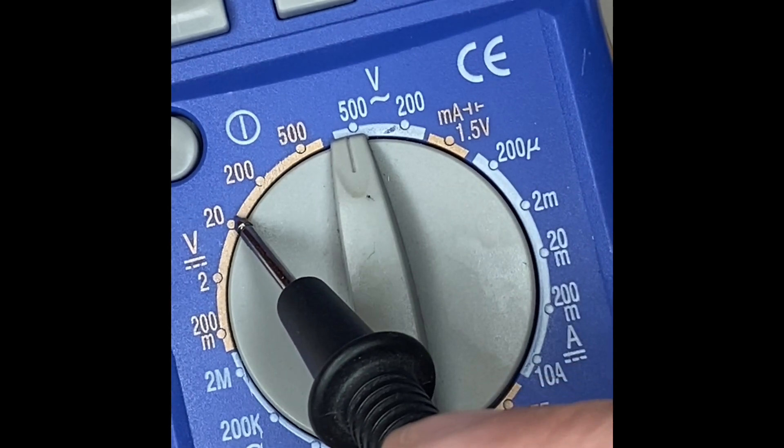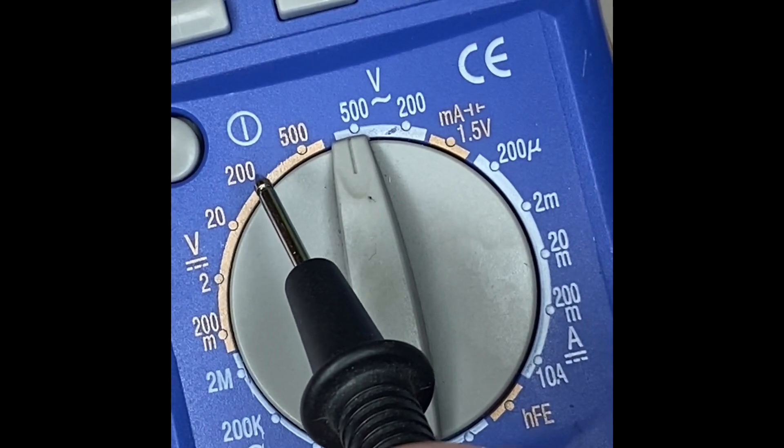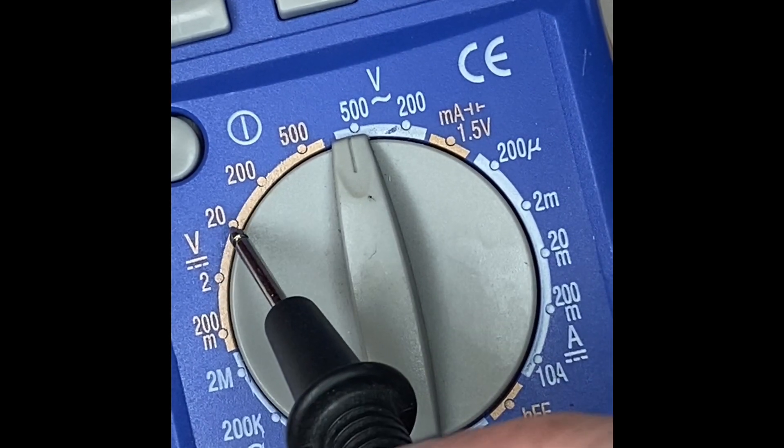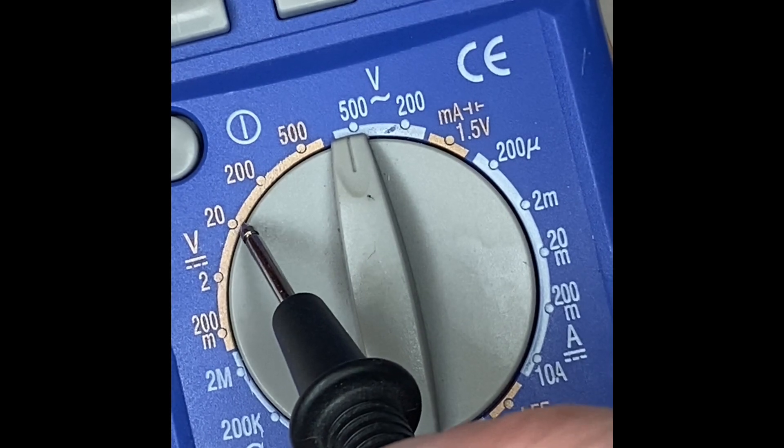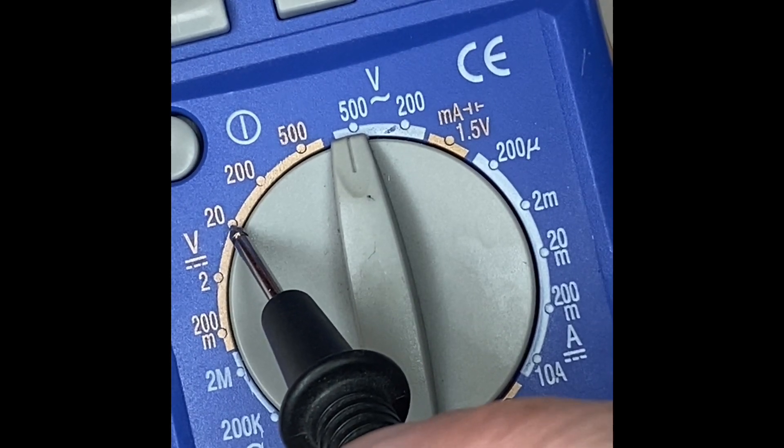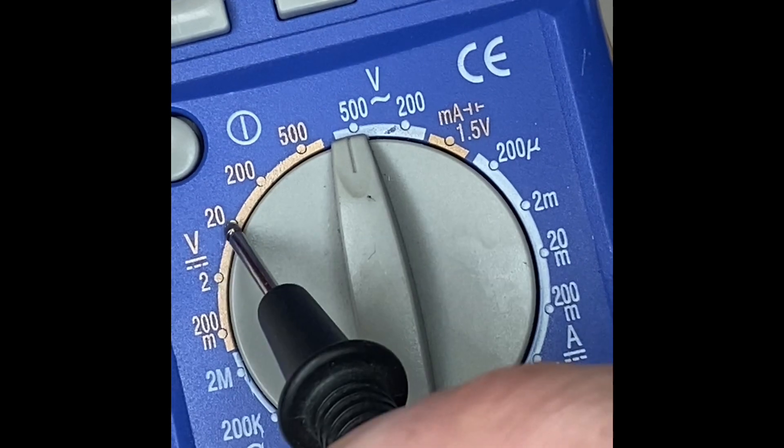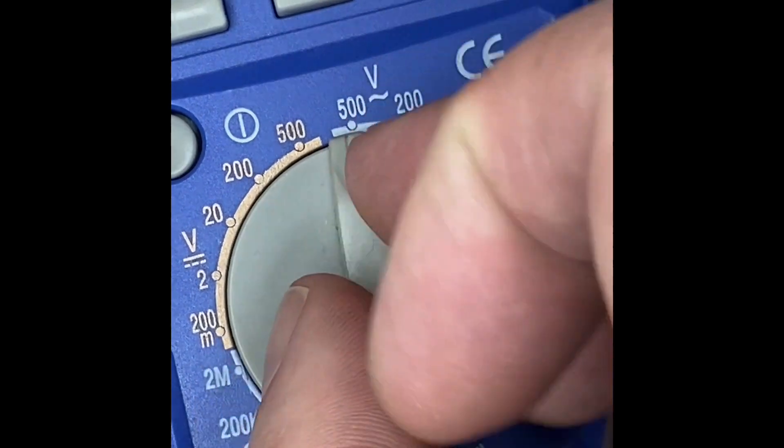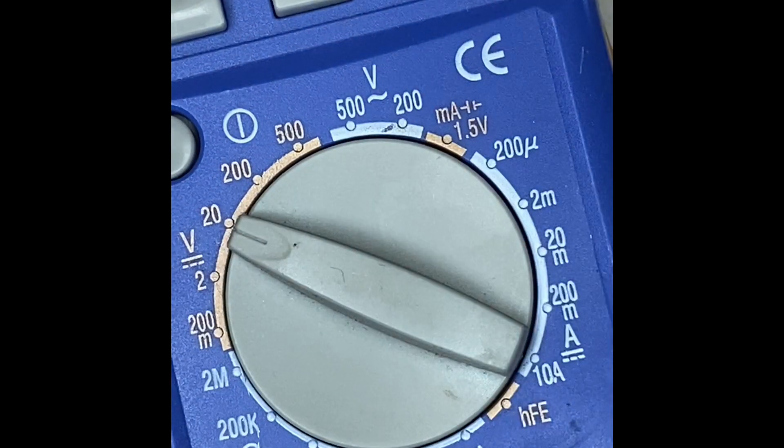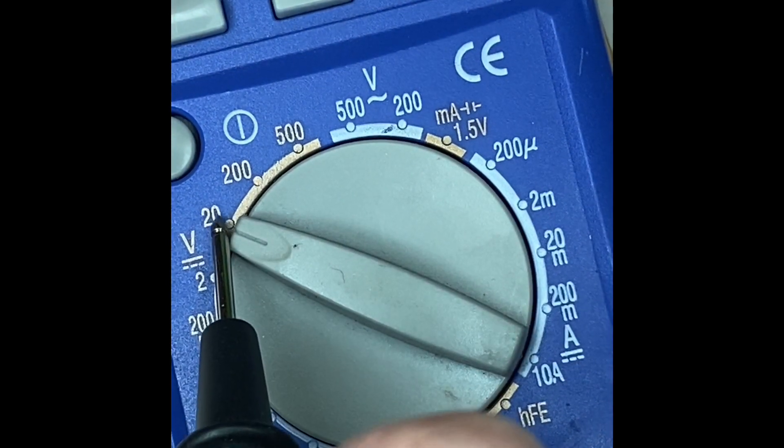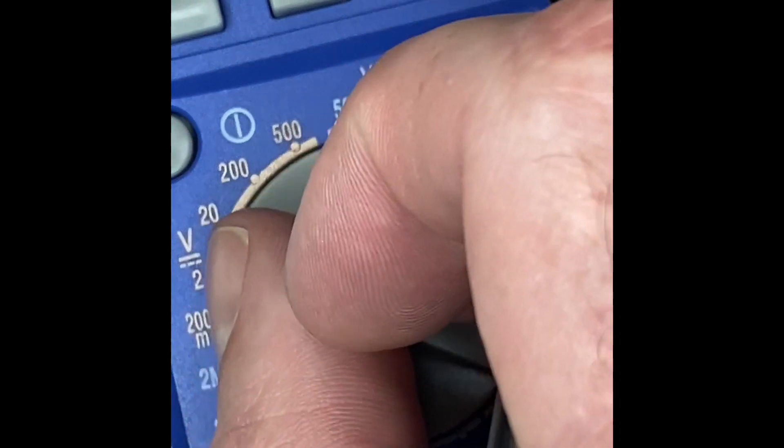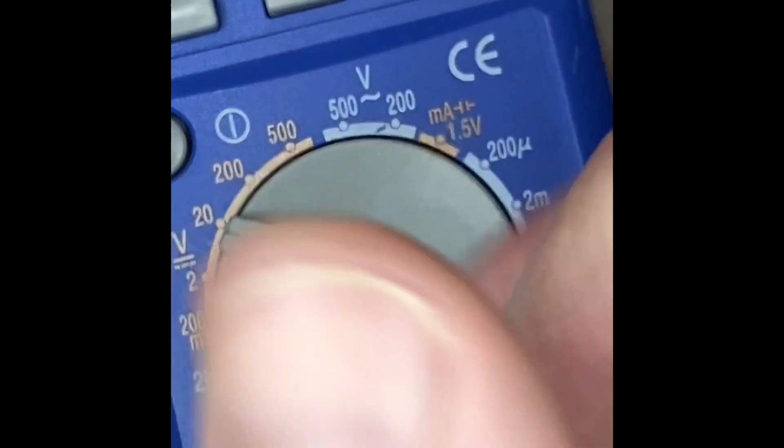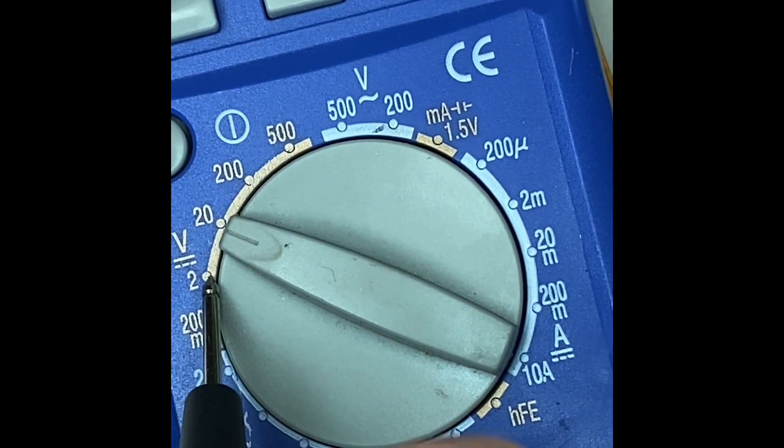And then you want to set it as close to the voltage that you're going to be reading without going under. We're going to be typically measuring 9 volts, so the closest we can get without going under is 20, so we're going to set it to 20. If you wanted to measure something that was 24 volts DC, then you'd need to set it to 200. But we're doing 9 volts, so we're going to set it to 20. If I set it for 2, it's going to be too low and it's not going to take the measurement.